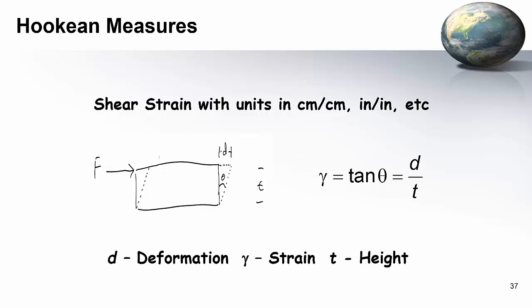And the angle is theta. So gamma, which is for the shear strain, is equal to D by T, which is tangent of the deformation angle.